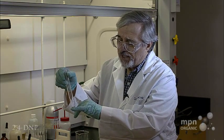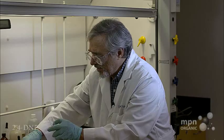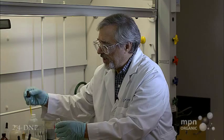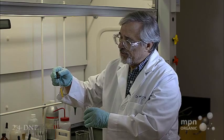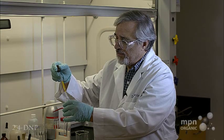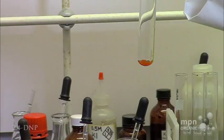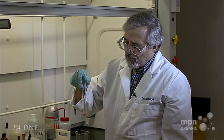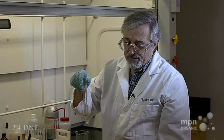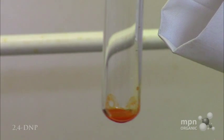So we've got paraanis aldehyde in there. Now let's take the 2,4-DNP reagent, and you can see that it's a yellowish color. Now when I drop this in here, you can see that almost immediately when the reagent contacts the paraanis aldehyde, we get the formation of a bright orange solid.